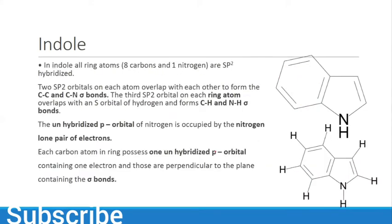In indole, all ring atoms - 8 carbons and 1 nitrogen - are sp2 hybridized. Two sp2 orbitals on each atom overlap with each other to form carbon-carbon and carbon-nitrogen sigma bonds.